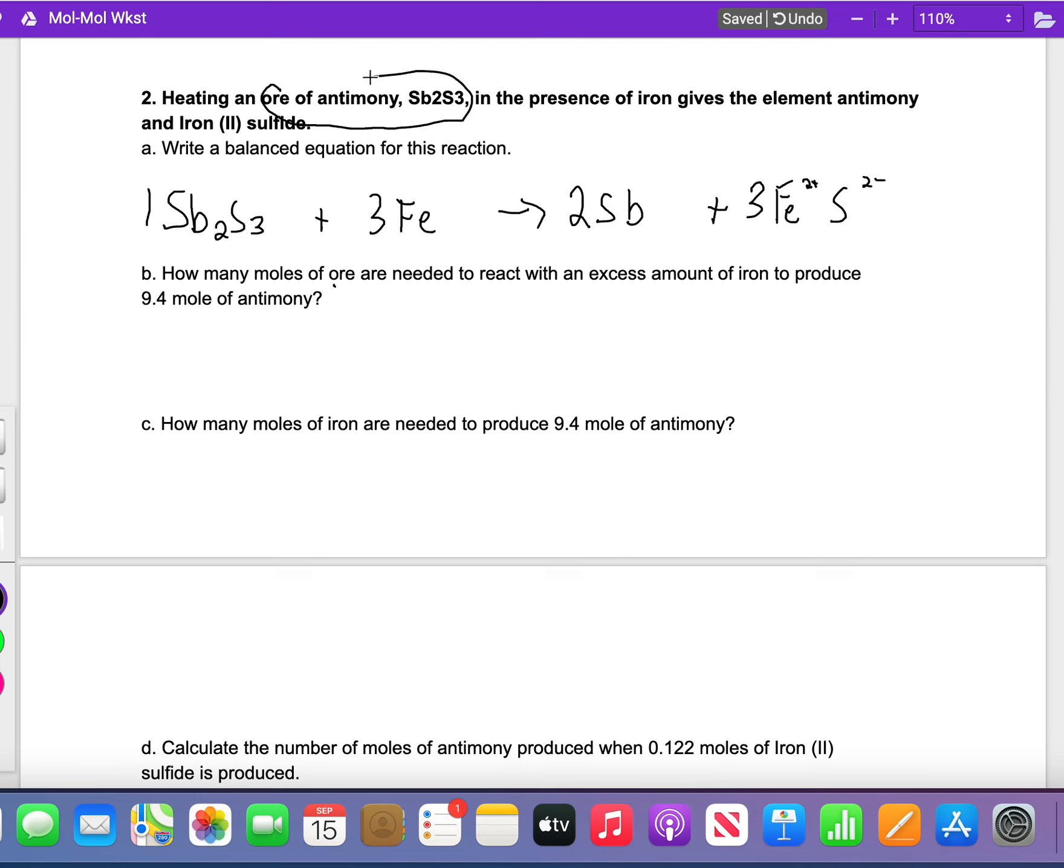Now this one says how many moles of ore? The ore is this stuff right here, Sb2S3. How many moles of ore are needed to react with an excess amount of iron to produce 9.4 moles antimony? So we write down 9.4 moles antimony. Antimony is Sb, that's an element.